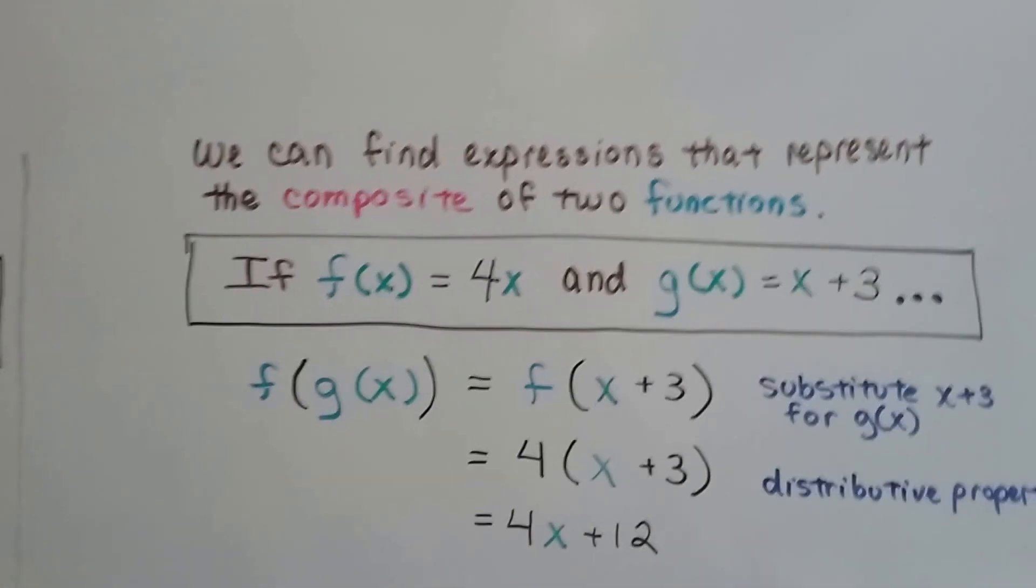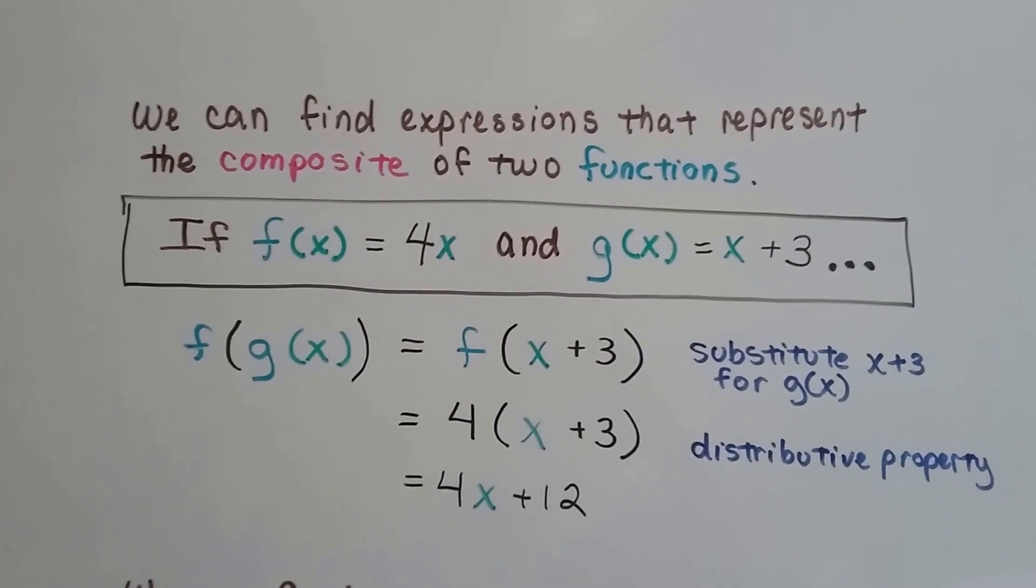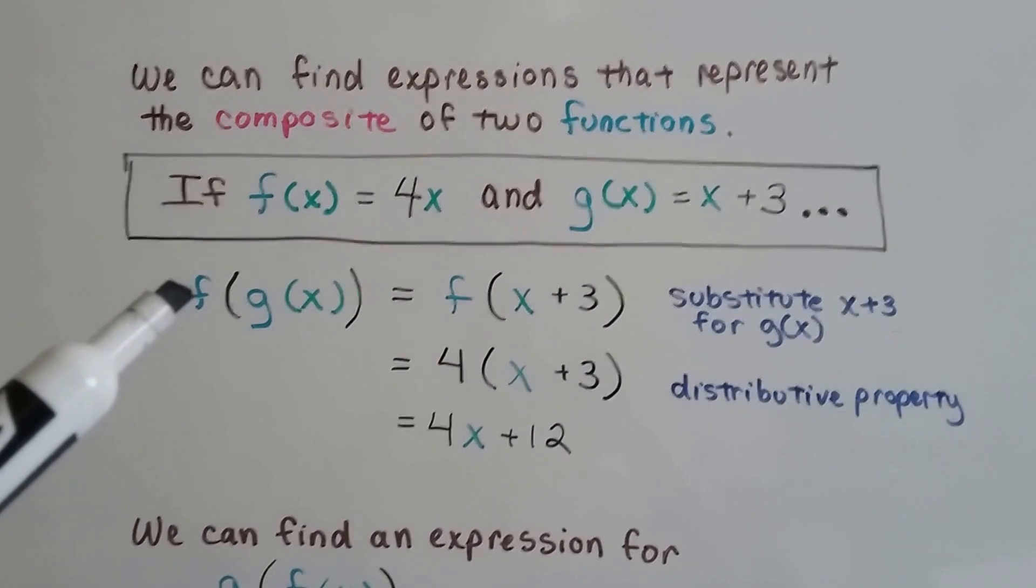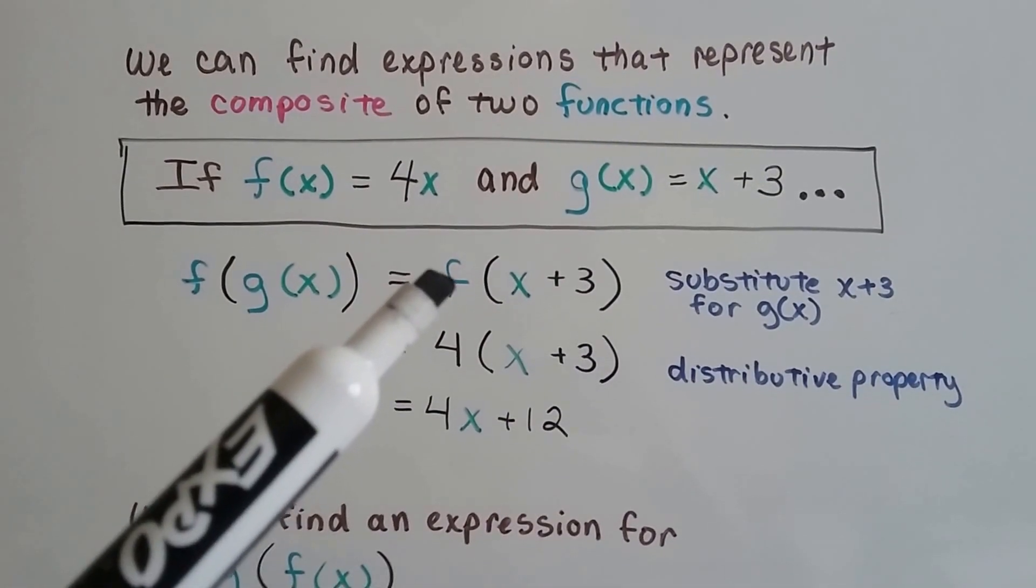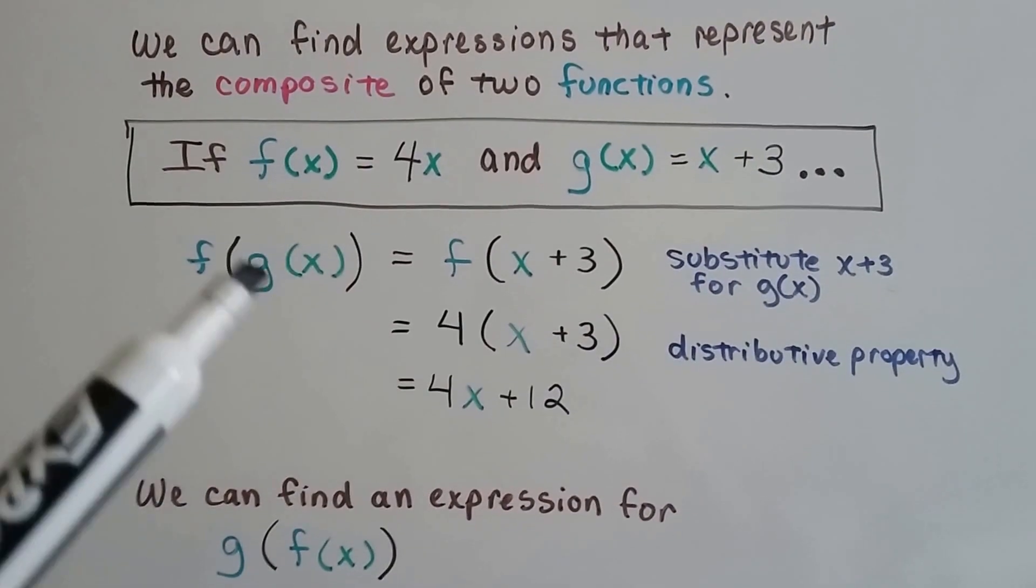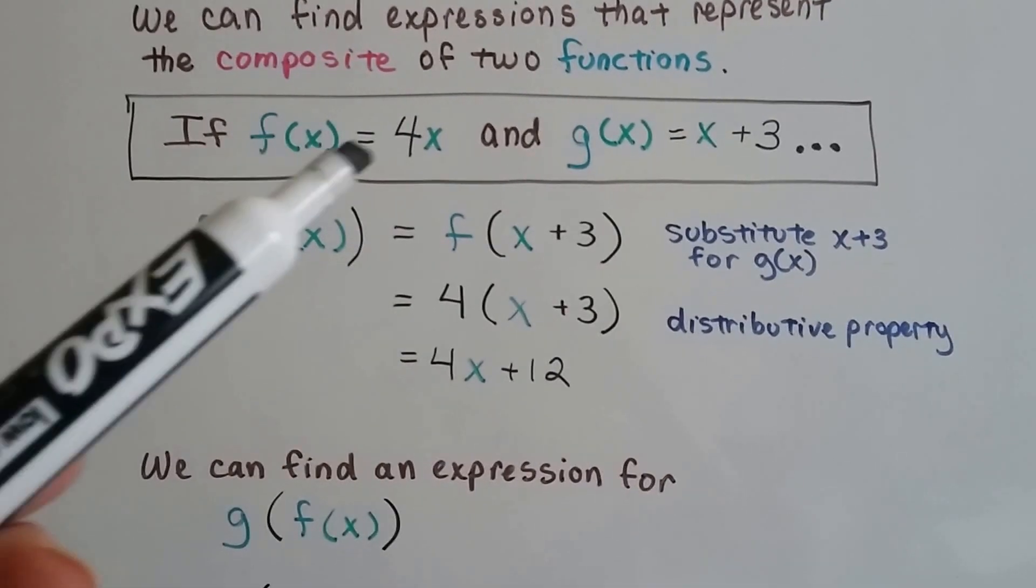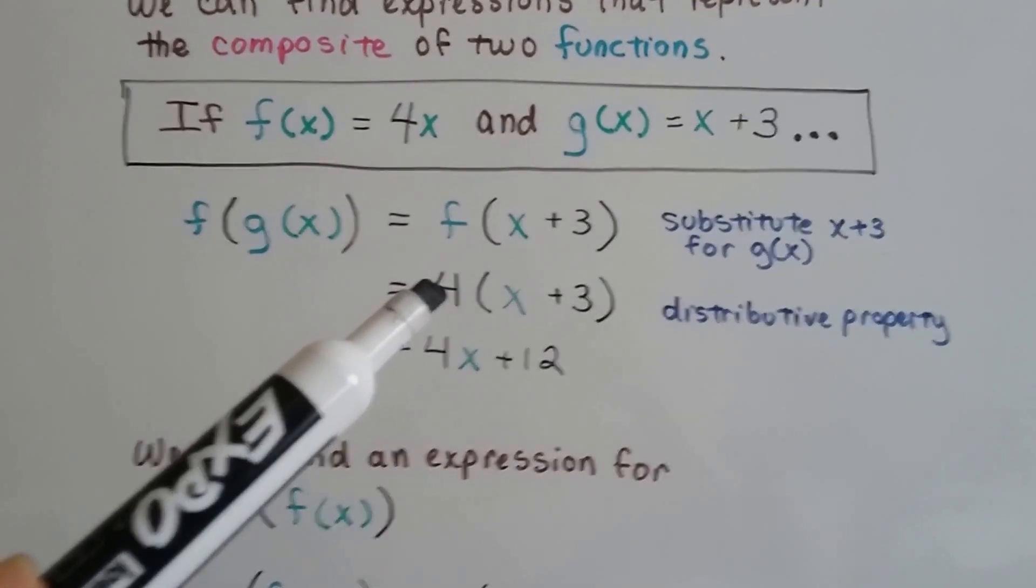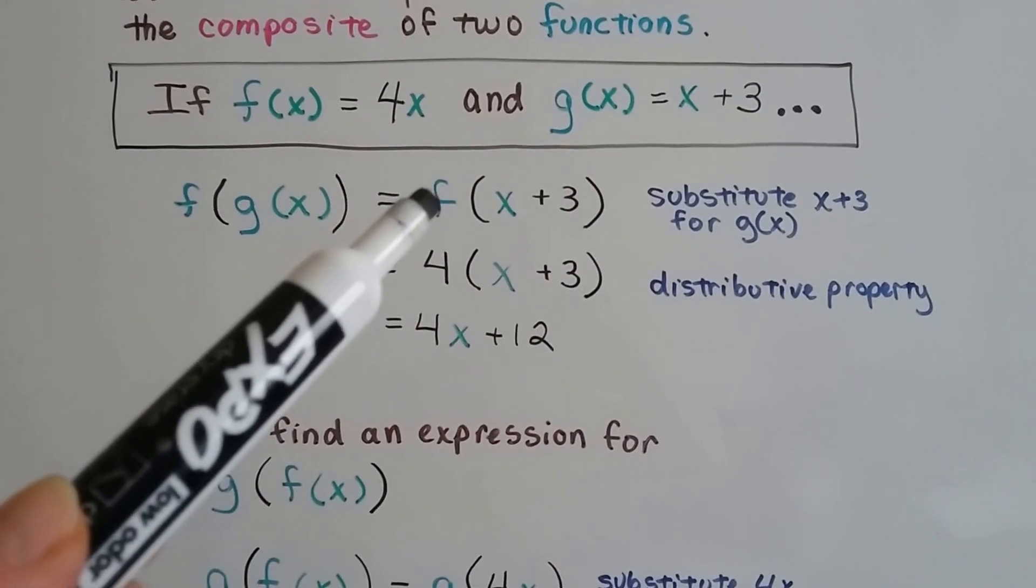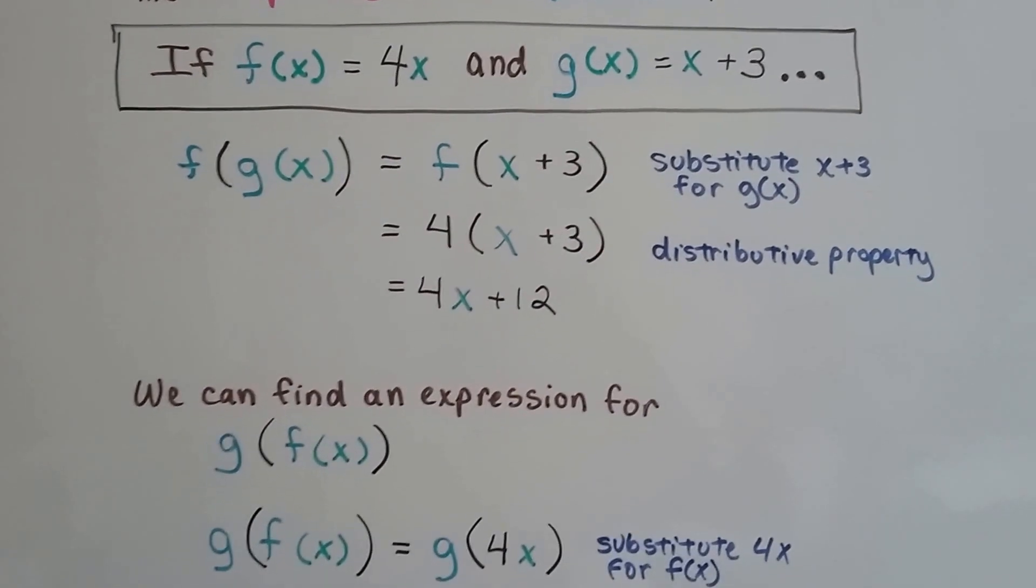Now we can find expressions that represent the composite of two functions. So if f of x equals 4x and g of x equals x plus 3, we're going to substitute these values in for f of x and these values in for g of x. So we've got f of g of x is going to equal f times x plus 3. If g of x is x plus 3, that means we can take these out and put the x plus 3 in its place. We just substitute it in. And if f of x is 4x, if the function is a 4, then we can just put the 4 here for the f. It just says f. It doesn't say f of x. So the f is x plus 3. Now we have 4 times x plus 3. That gives us 4x plus 12. Distributive property.